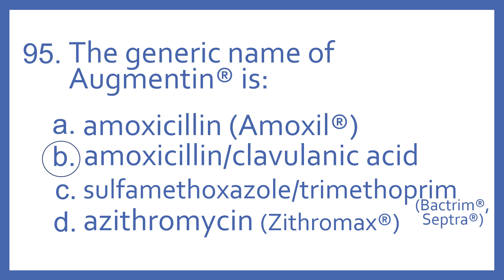Amoxicillin and Amoxicillin with clavulanic acid are in the penicillin antibiotic class. Sulfamethoxazole with trimethoprim is a sulfa antibiotic. And azithromycin is a macrolide antibiotic, in the class with erythromycin.